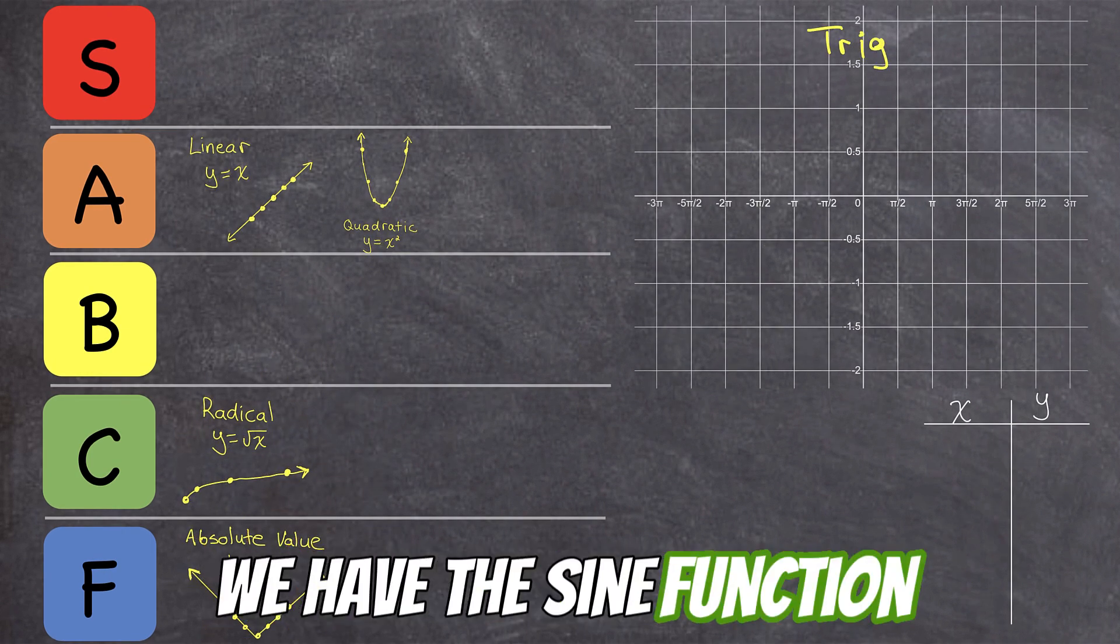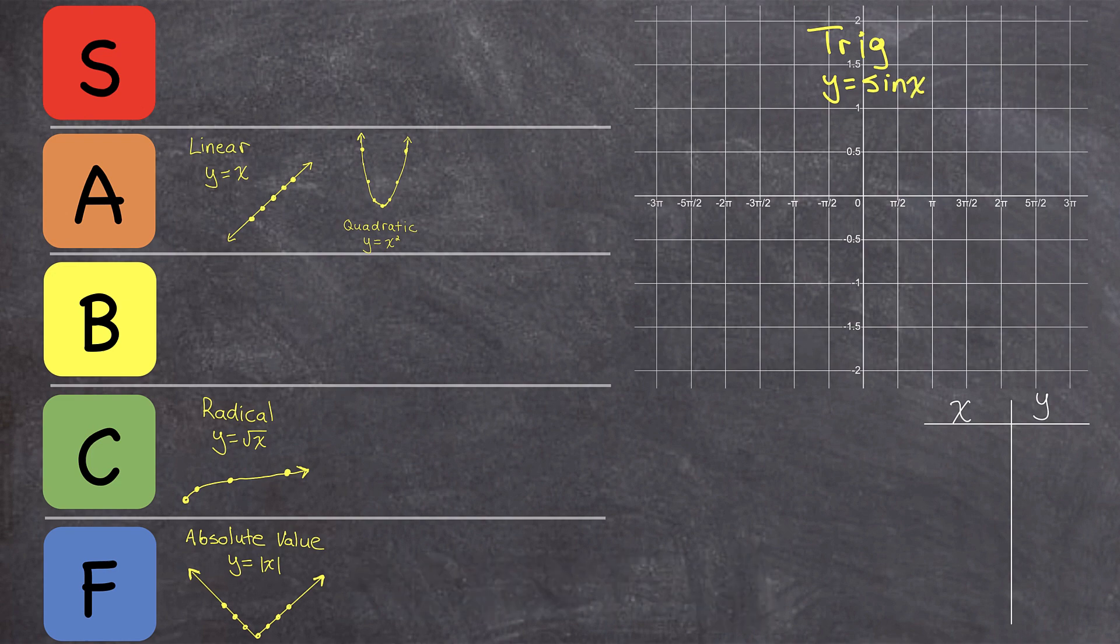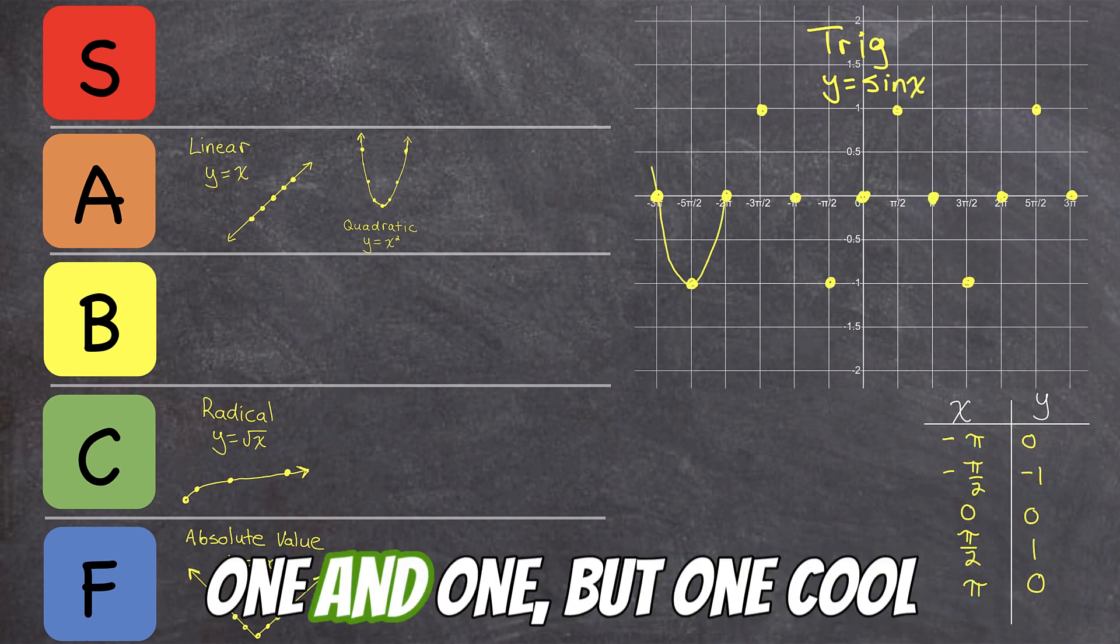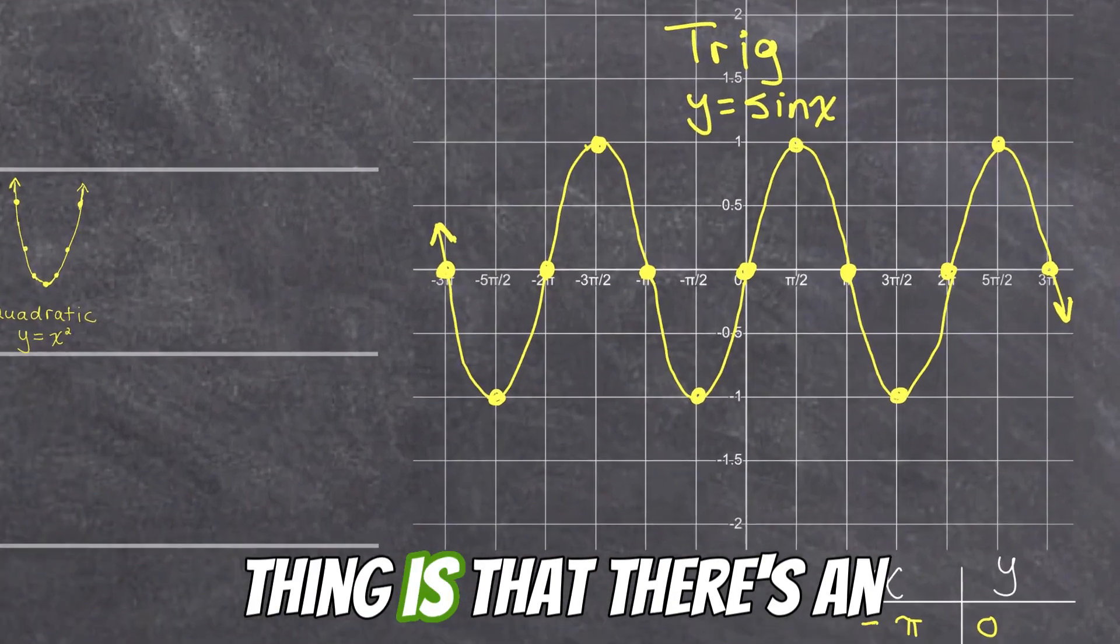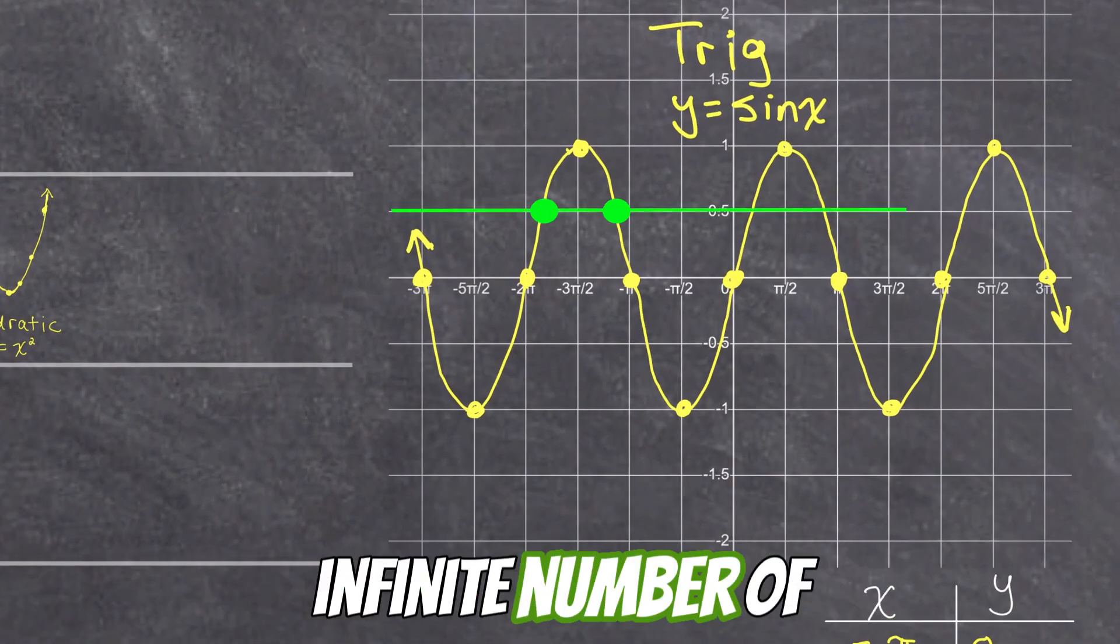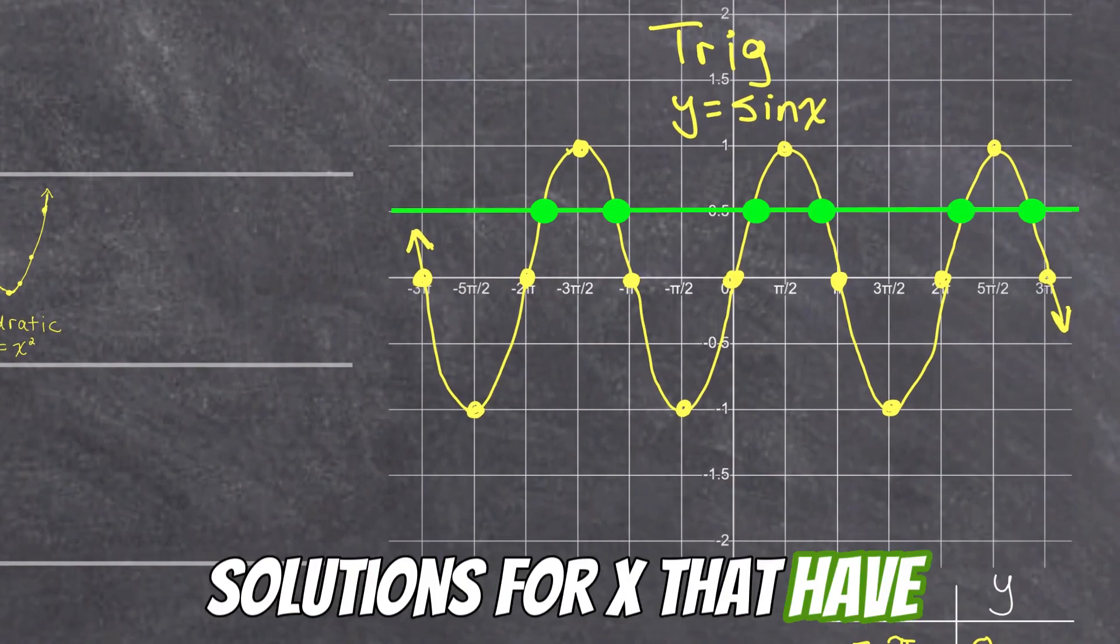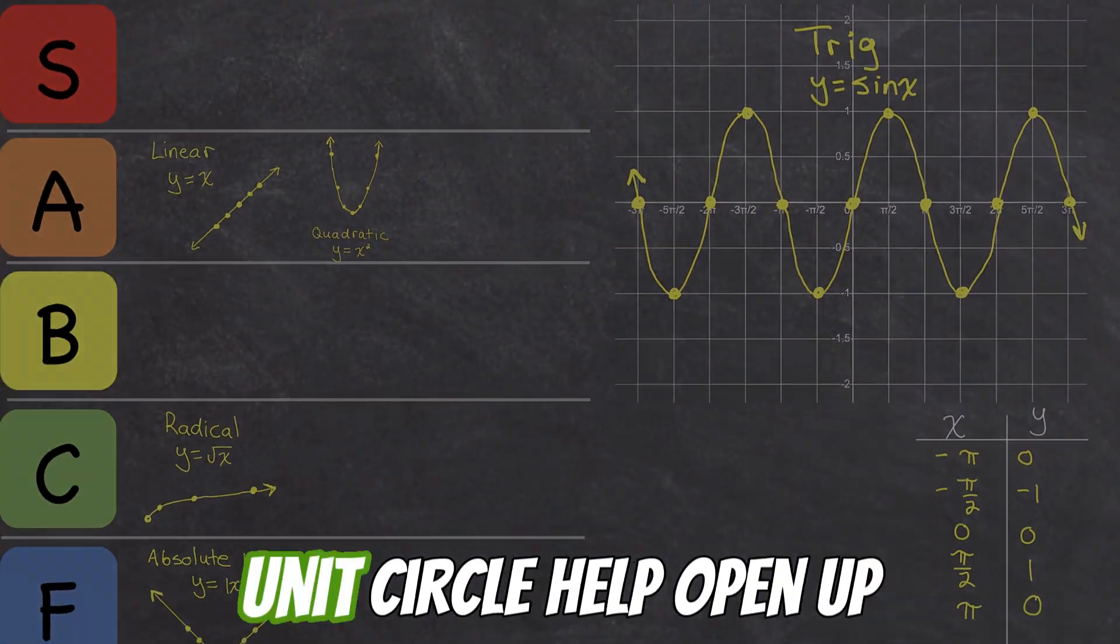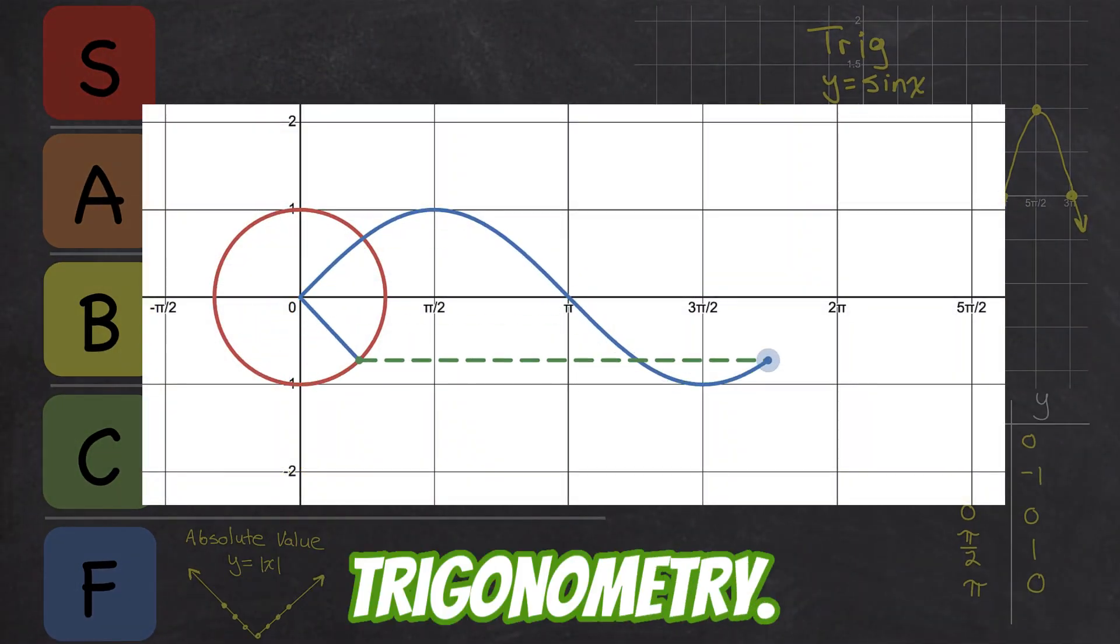Next up, we have the sine function, y equals sine x. This function does have a range that's restricted to being between negative one and one, but one cool thing is that there's an infinite number of solutions for x that have a y value that's between negative one and one. Also, connections to the unit circle help open up the world of trigonometry.